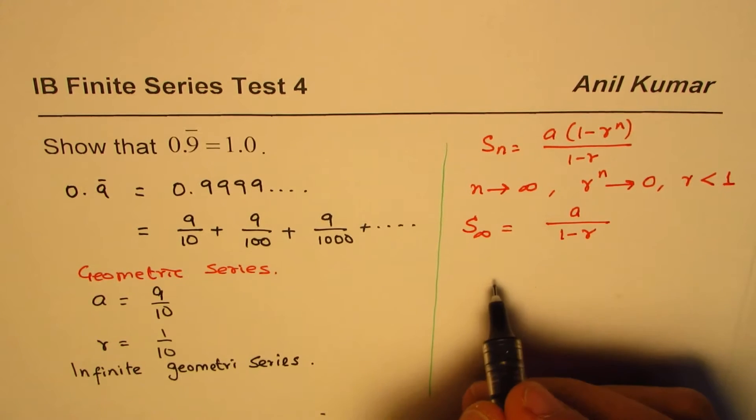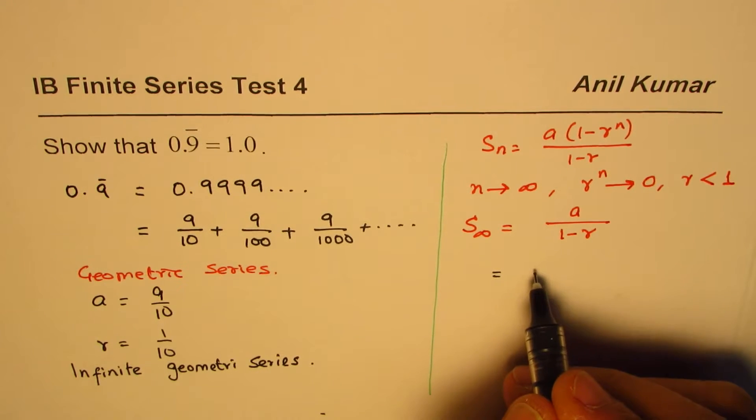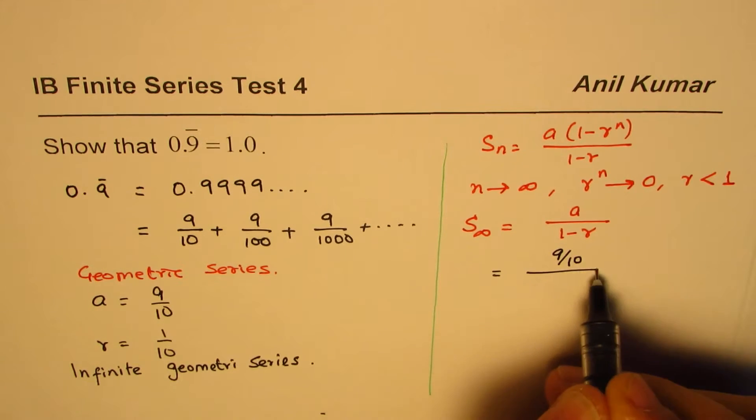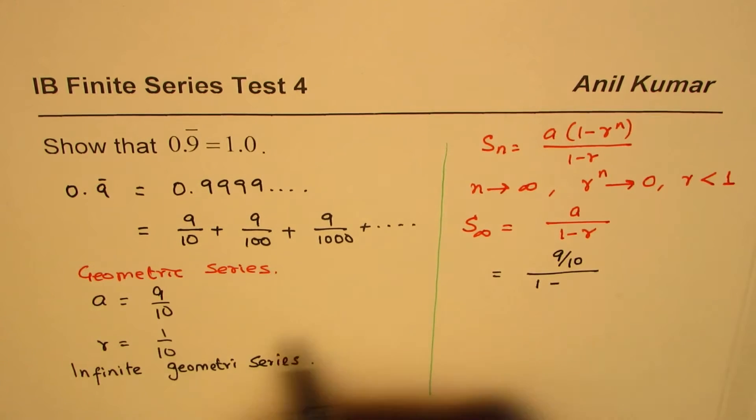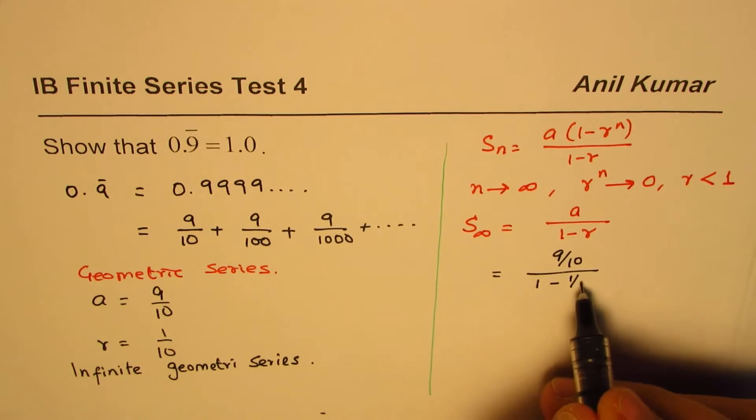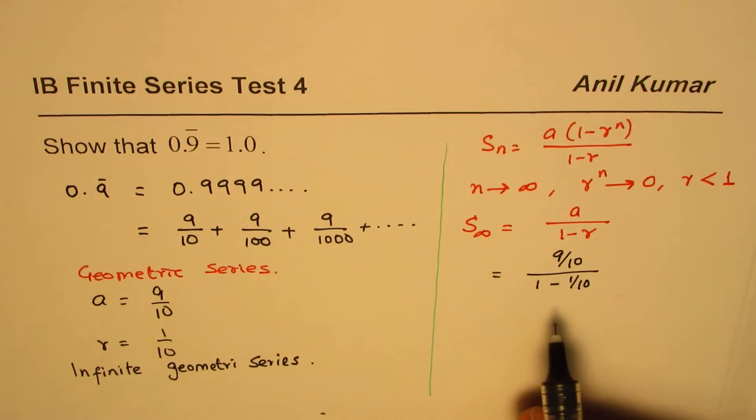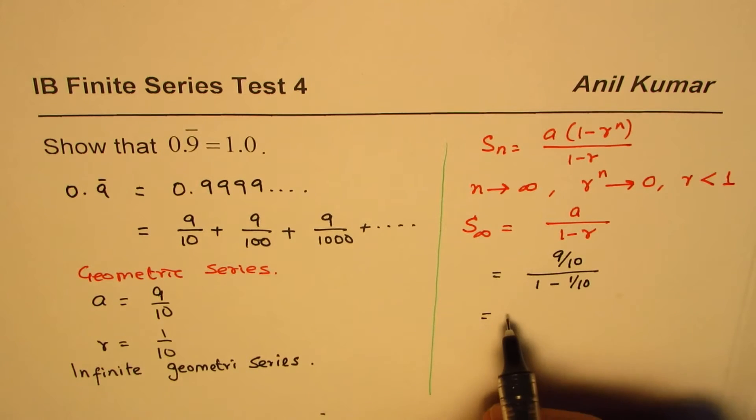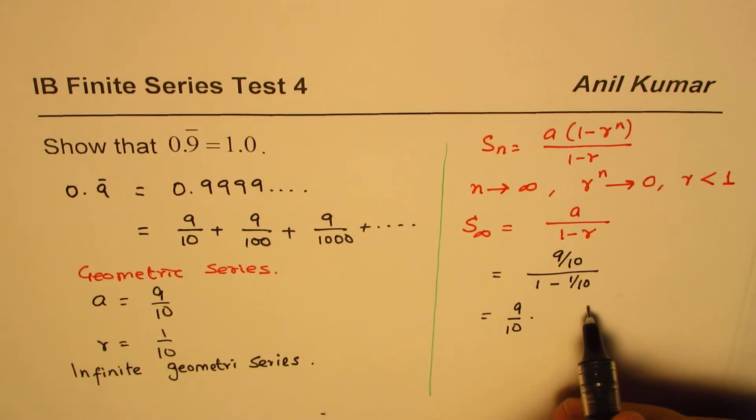So we can write this as a = 9/10 divided by (1 - r), where r is 1/10. So that is what we get. This could be rewritten as 9/10 times... let me show you - 1 - 1/10.